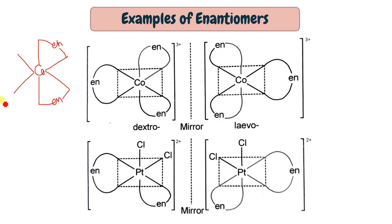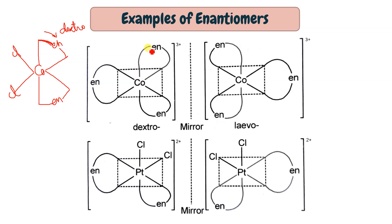For an MAA₂B₂ type example: start the bidentate ligand from the axial position. If the bond continues in the clockwise direction, there is no bond on the other side — this is dextro. The mirror image of this structure will go to the other side, making it levo. For the MAA₃ type, if moving to the left side from the axial position, it is levo.